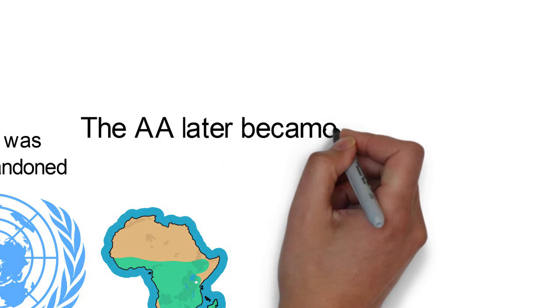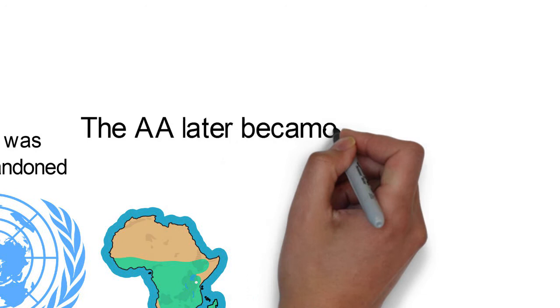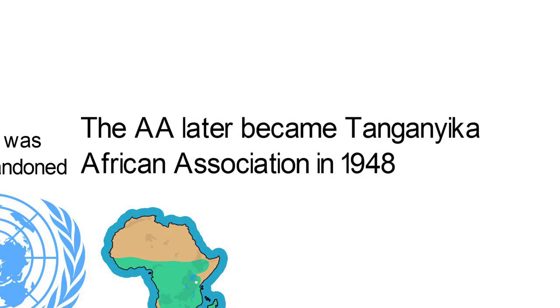The AA later got renamed to the Tanganyika African Association in 1948.